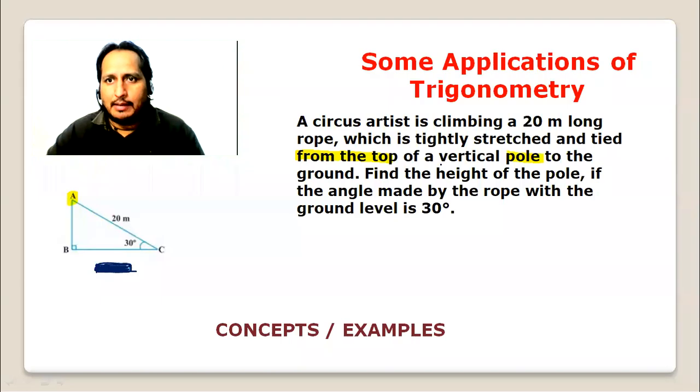A circus artist is climbing a 20 meter long rope which is tightly stretched and tied from the top of a vertical pole to the ground. Find the height of the pole if the angle made by the rope with the ground is 30 degrees.